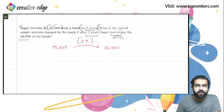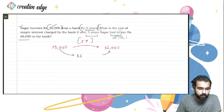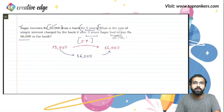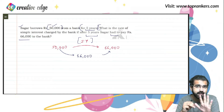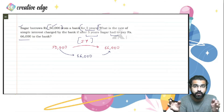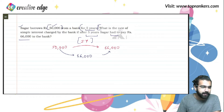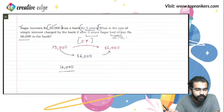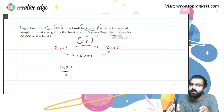If the principal is ₹50,000 and after five years what Sagar had to return was ₹66,000, can we say the difference is nothing but the simple interest generated in these five years? The simple interest for five years is the additional amount he's paying: 66,000 − 50,000 = ₹16,000. This is the total simple interest for five years. Since simple interest remains the same throughout all these years, every year the simple interest is ₹16,000 ÷ 5.